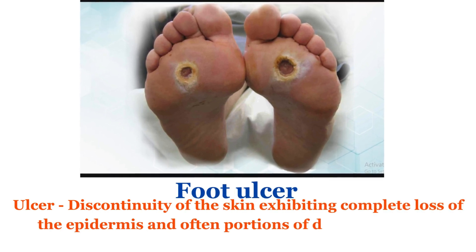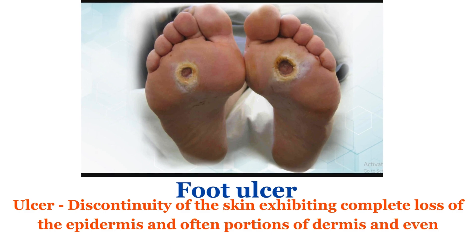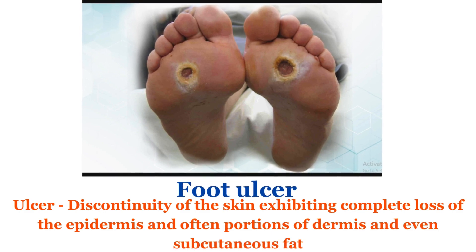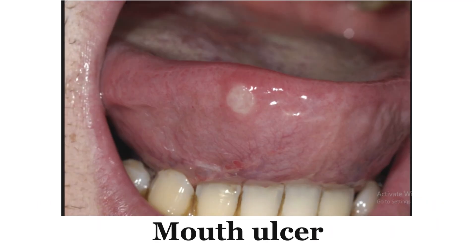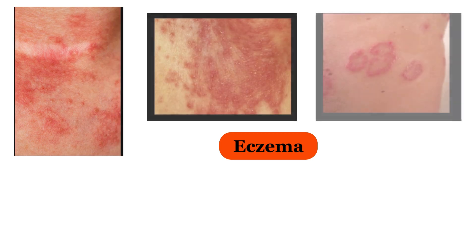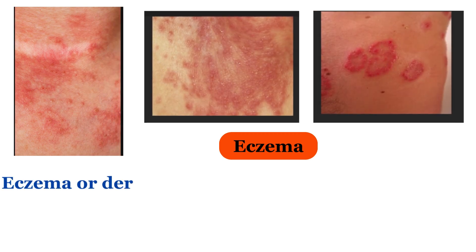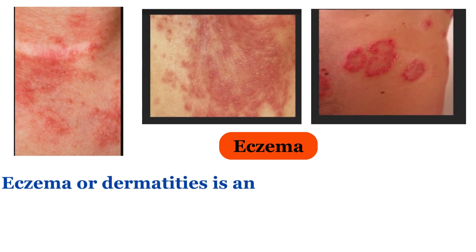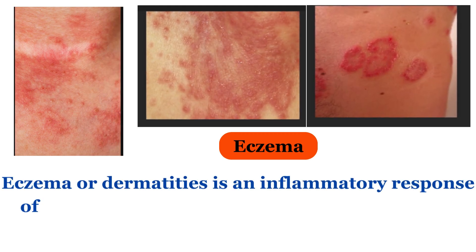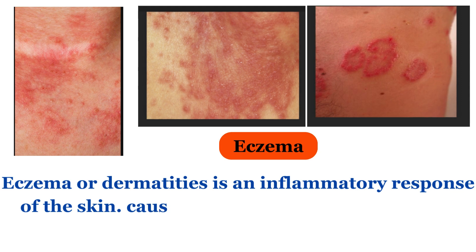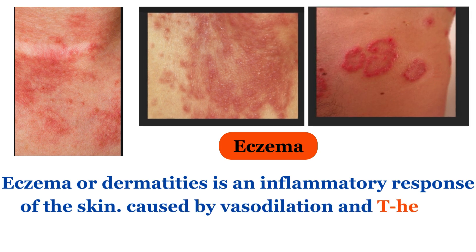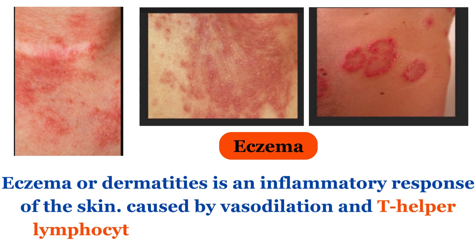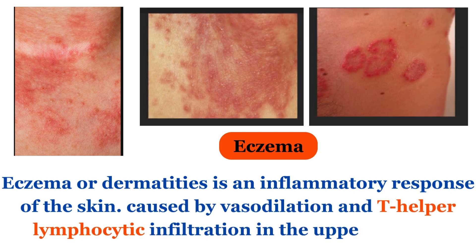Abscess affects end portions of the dermis and even subcutaneous fat. Eczema or dermatitis is an inflammatory response of the skin caused by vasodilation and T-helper lymphocytic infiltration in the upper dermis.